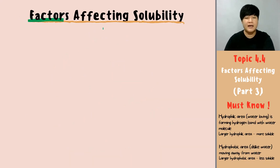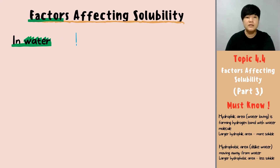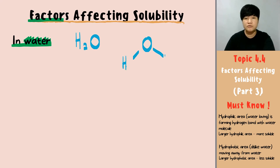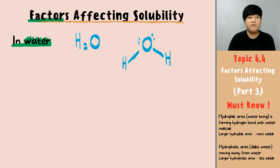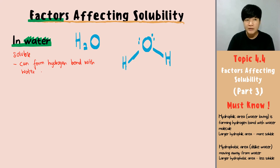So what would be the factor that actually affects the solubility? We are going to talk only about the solubility in water. Your water is H2O, and in terms of Lewis structure it should look something like a V-shape from the tetrahedral. Whenever a compound is soluble in water, it means it can form hydrogen bonds with the water molecule.